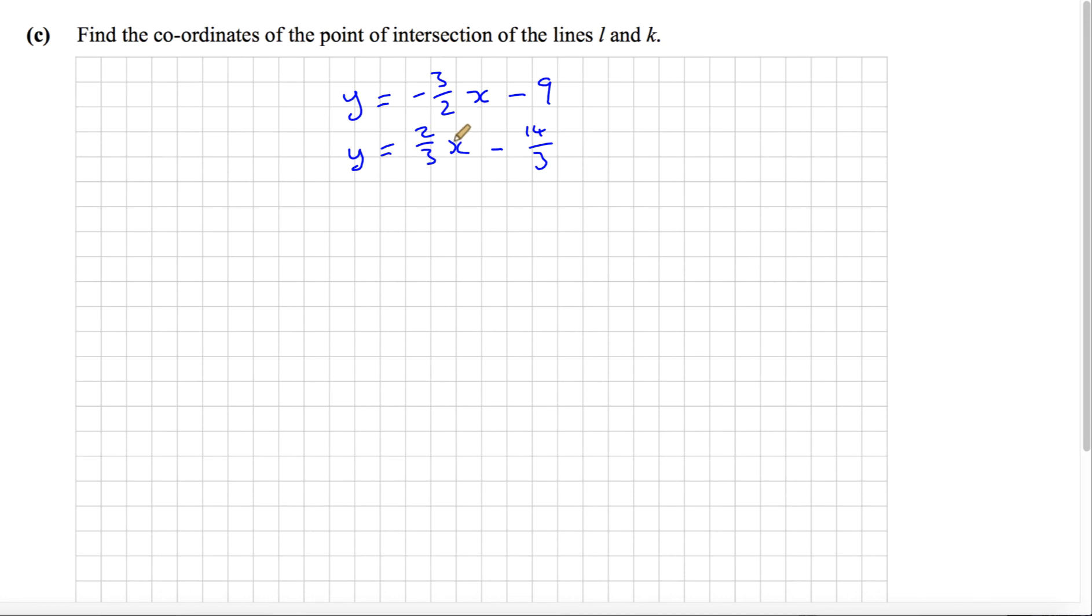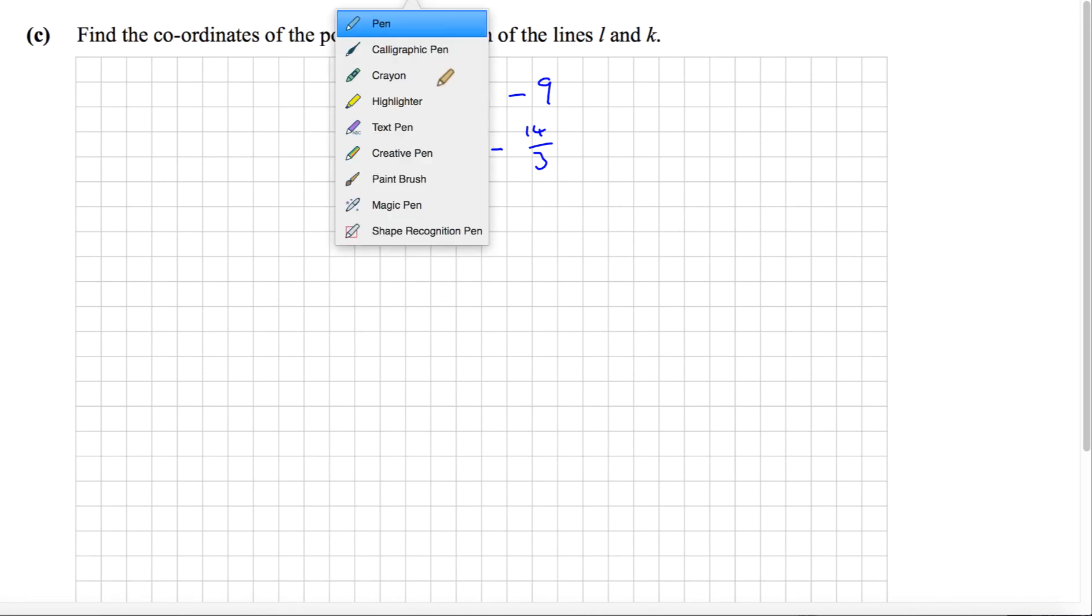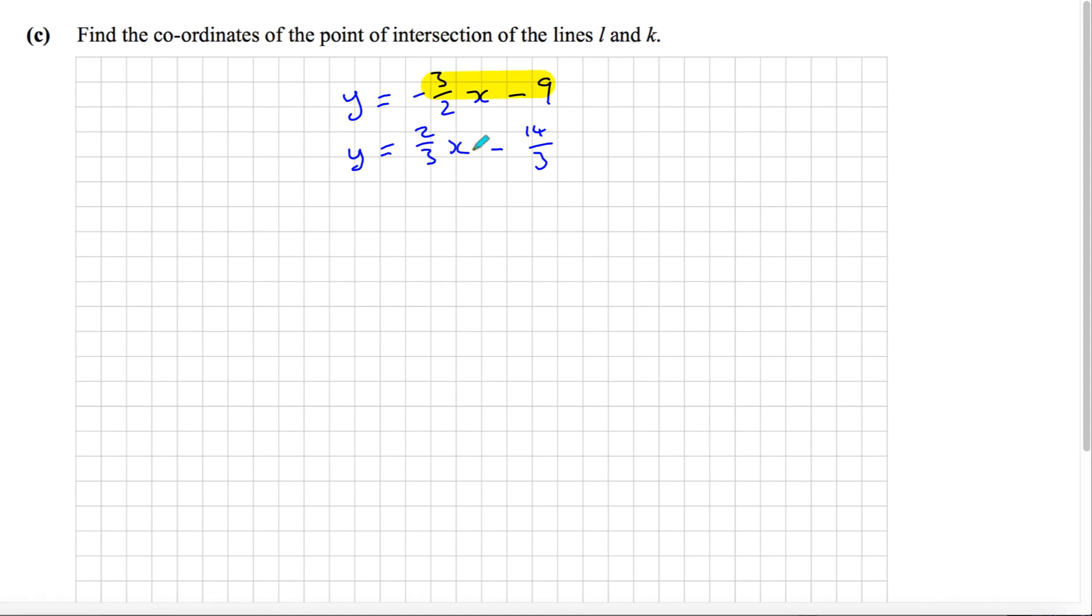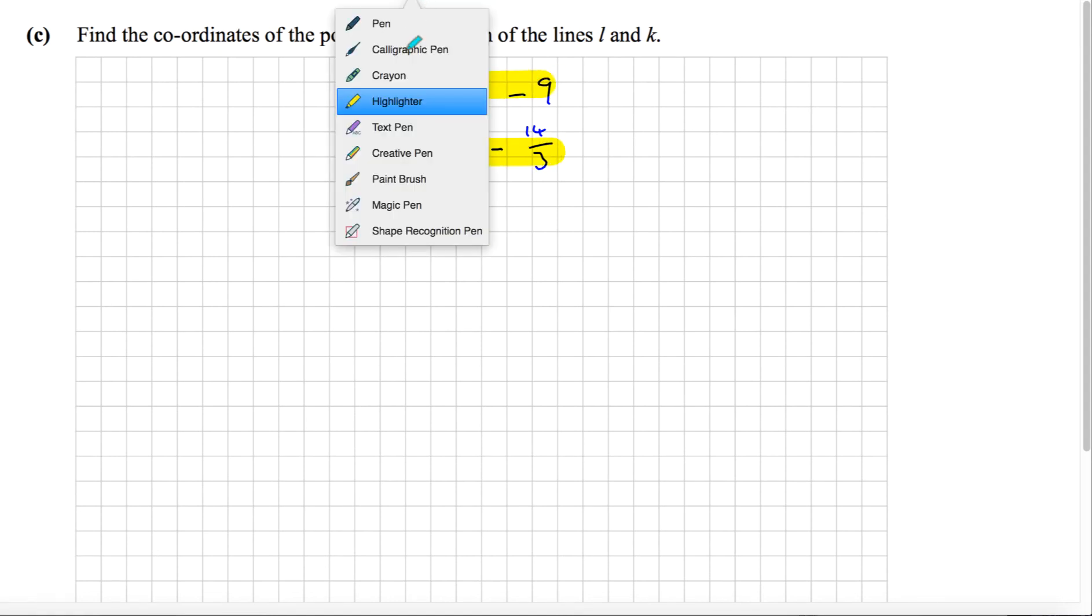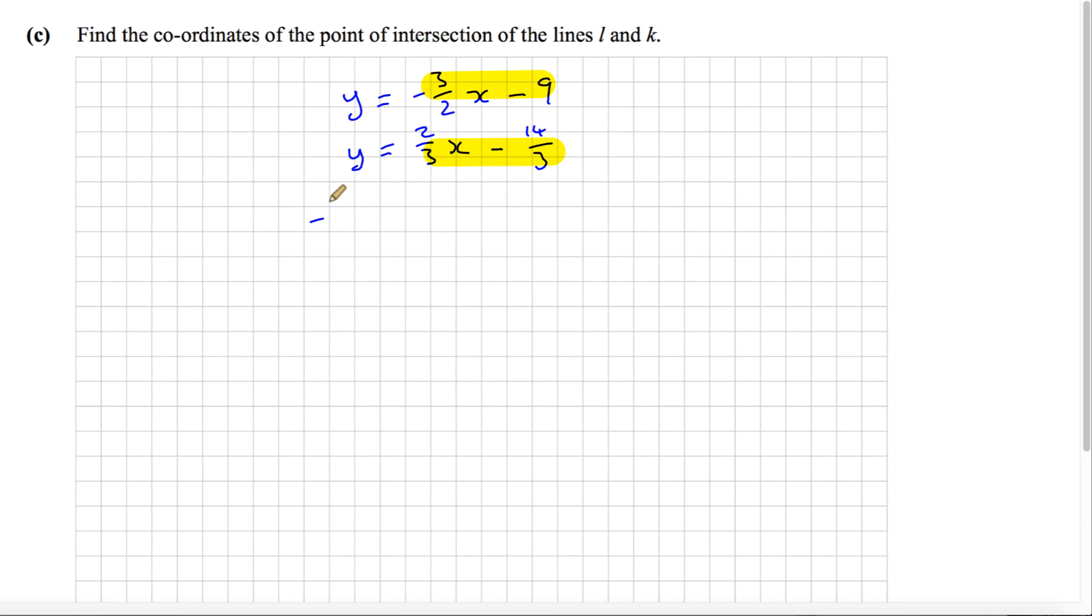To find the point of intersection, if y is equal to this and y is equal to that, we can let the yellow equal to the other. That gives us minus 3 over 2x minus 9 equals 2 thirds x minus 14 over 3.